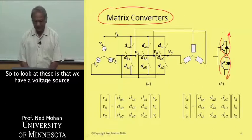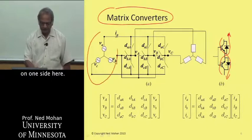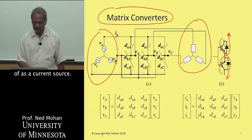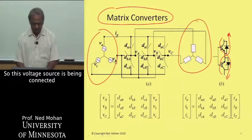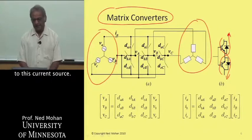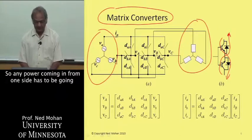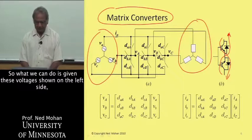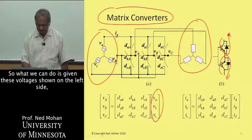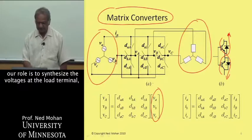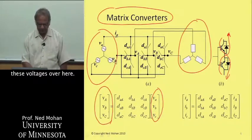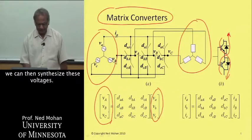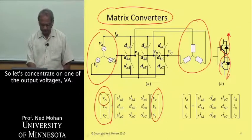We have a voltage source on one side and this load. And because of the inductance, we can think of it as a current source. So this voltage source is being connected to this current source and there is no storage in the middle. So any power coming in from one side has to be going out on the other side. Given these voltages shown on the left side, our role is to synthesize the voltages at the load terminal. By having appropriate duty ratios of these switches, we can then synthesize these voltages.